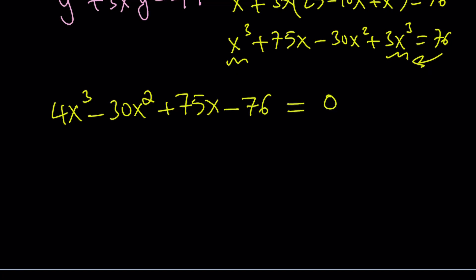So that gives us 4x cubed minus 30x squared plus 75x minus 76 equals 0. And this is a cubic equation, so we can use the cubic formula. First of all, divide both sides by 4 and then get rid of the x squared term by making a linear substitution, so on and so forth. That's a long process. So before doing any of that, let's go ahead and use RRT.